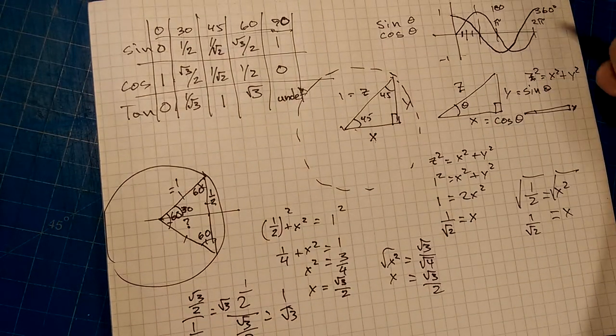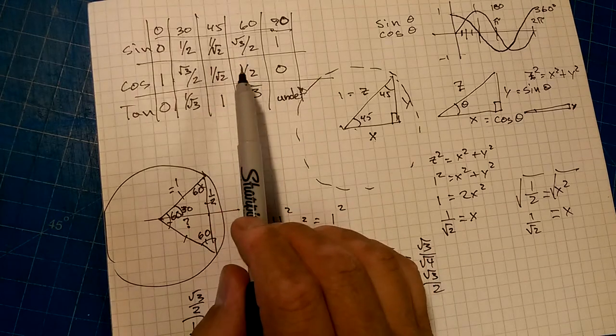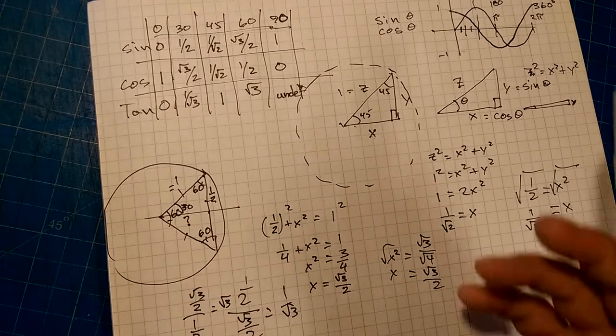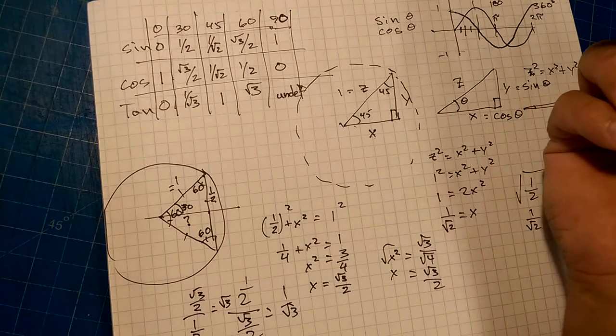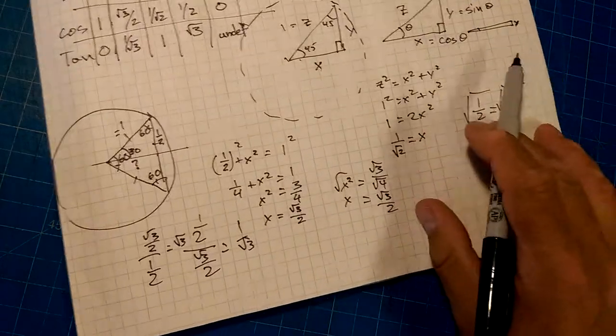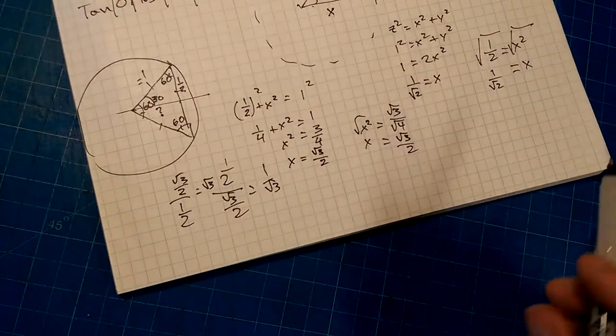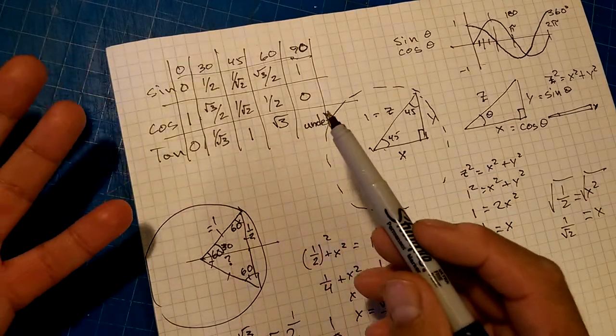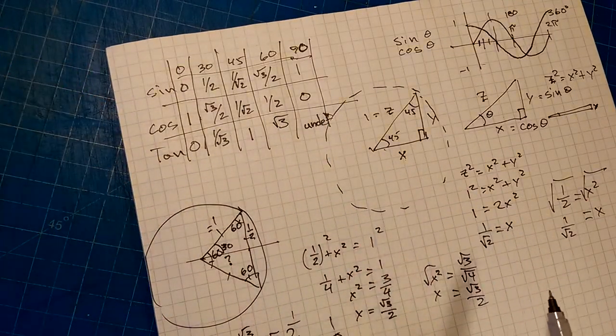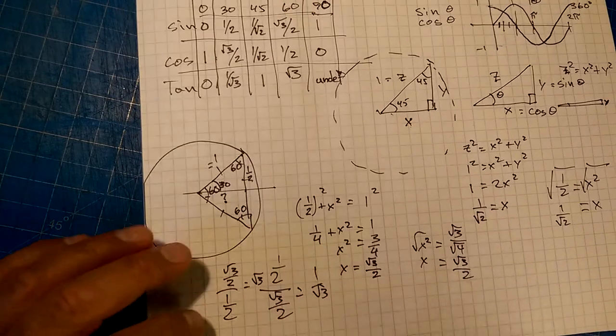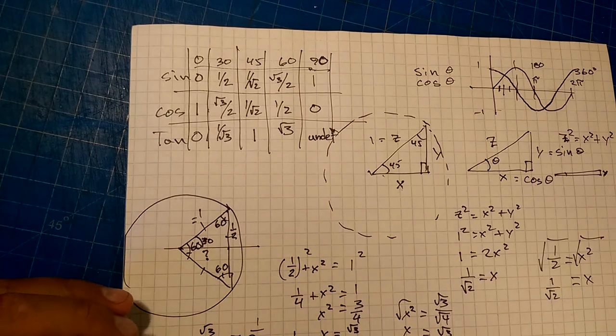And for the life of me, I don't know why I just don't memorize this freaking thing, but I don't. And every time I want to calculate sine or cos of 30 or 60, I have to go through this ridiculous derivation. Just because I can't be bothered to memorize 8 numbers drives me nuts sometimes, but that's just the way of the world sometimes.